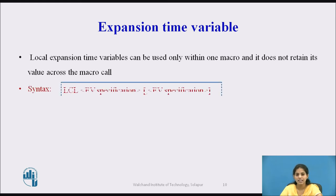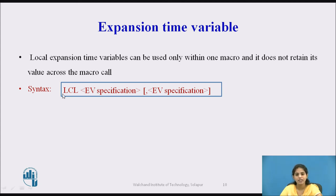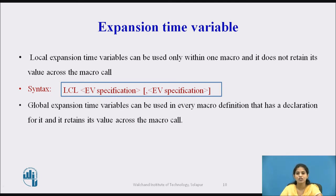The syntax for creating a local expansion time variable is: specify the word LCL followed by the EV specification. Global expansion time variables can be used in every macro definition that has a declaration for them, and they retain their value across macro calls.